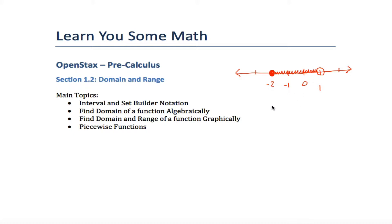You have two options: interval notation or set builder notation. I prefer interval notation, so that's first. The way you use interval notation is you look at your interval and figure out the lower bound — in this case, negative two — and the upper bound — in this case, one. So I want all the numbers from negative two to positive one. I need to indicate that I am including negative two but not including positive one.